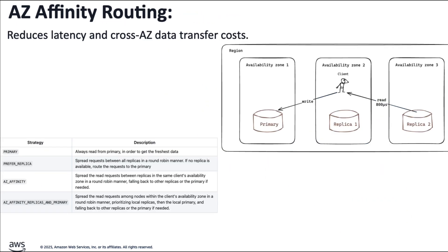Customers face extra cross-zone transfer charges and experience extra latency for cross-AZ communication, with costs sometimes comparable to actual node costs. In Valky 8, availability zone configuration was introduced, allowing clients to specify the AZ for each Valky server. Glide leverages this configuration with AZ-affinity routing and is the only Valky client library supporting AZ-affinity strategies. It reduces data transfer costs by directing operations to nodes within the same AZ, and also minimizes latency — the distance between AZs within the same AWS region is typically up to 60 miles or 100 kilometers, adding 500 to 1000 microseconds of round-trip latency. By keeping requests within the same AZ, you can reduce latency and improve application responsiveness.